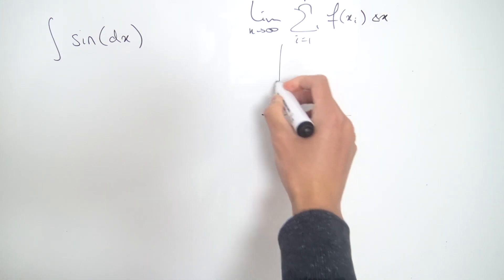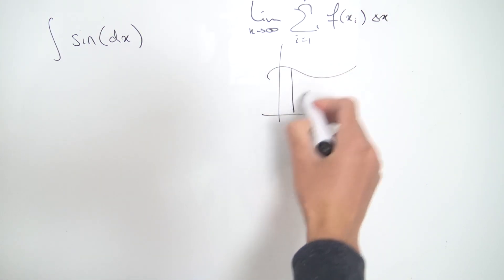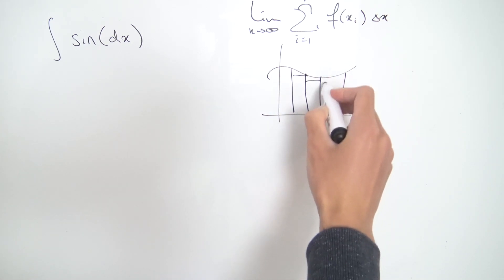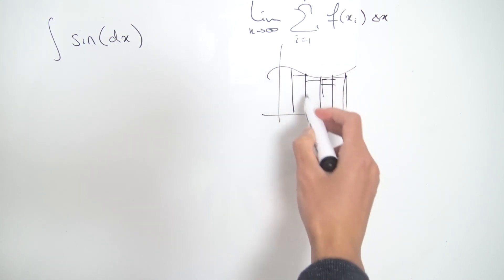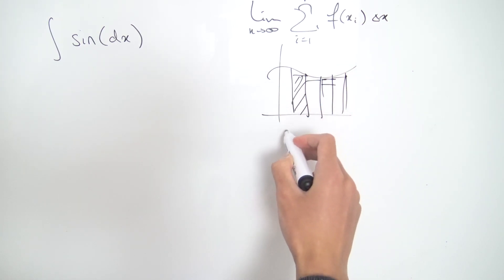So this gives us, if you imagine some function and you want to calculate the area underneath it, you can approximate it by a bunch of these small little rectangles. That's not a very good approximation, but you get the idea. Each of the areas of these rectangles is represented by f of xi times delta x.